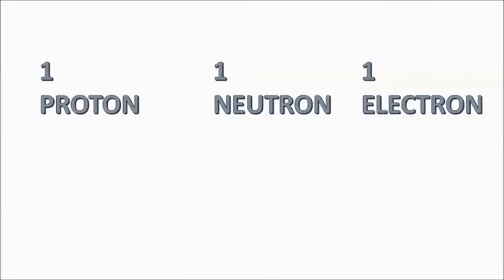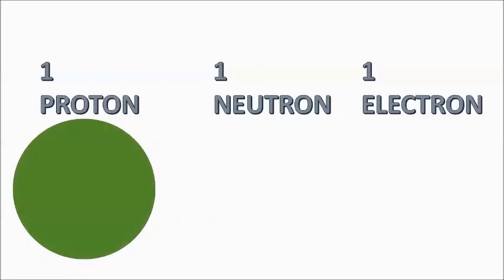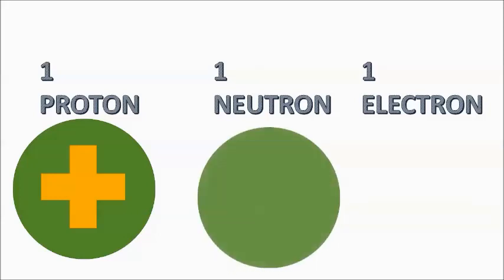Let's do a quick recap. We have one proton, one neutron, and one electron. The proton is really big, really massive, and really positive. The neutron is also really massive, but really chill — in science terms, we say no charge, or neutral. The electron is so, so, so tiny, and crazy negative.